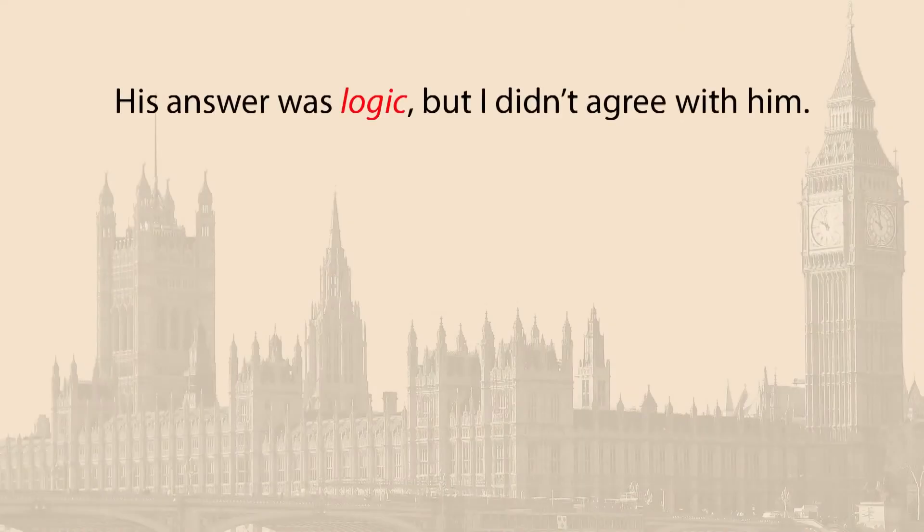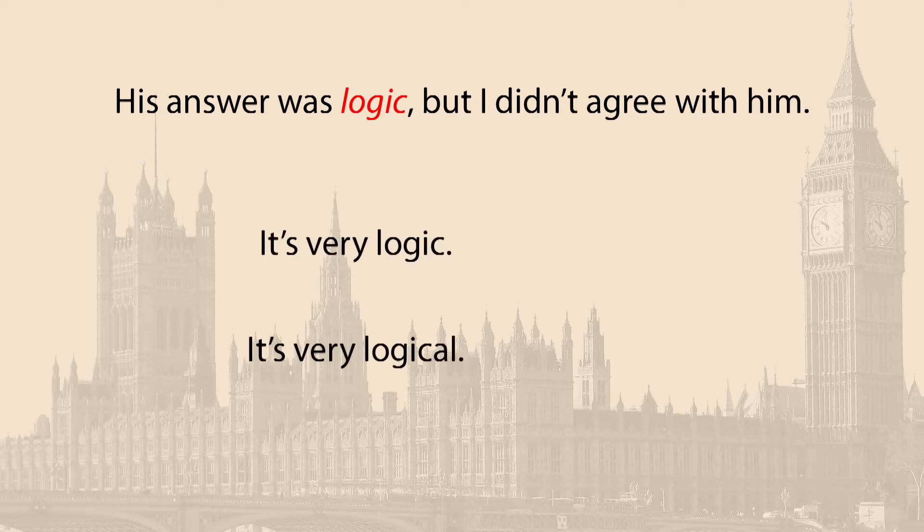Now it's time to practice. But before, we will look at some common mistakes and I will give you the solutions. Let's take a sentence: 'His answer was logic, but I didn't agree with him.' How can you say if a word is a noun or an adjective? Here's a tip: place 'very' before the word. 'It's very logic' — No. 'It's very logical' — Yes.